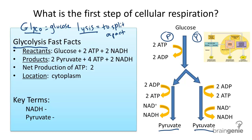The six-carbon molecule of glucose is then broken down into two three-carbon molecules called pyruvates. Pyruvates are simply just half of a glucose molecule. Four more molecules of ATP are made, creating a net production of two ATP. That's definitely important to remember.